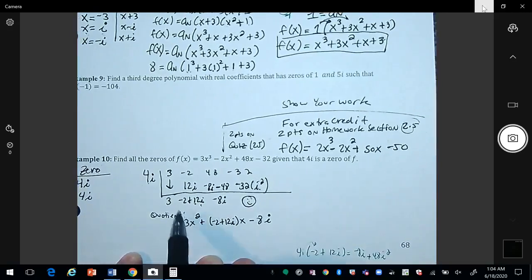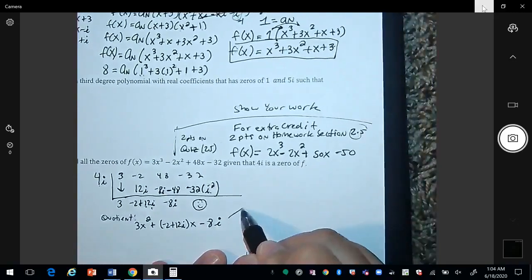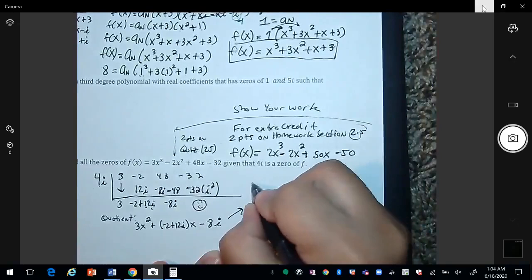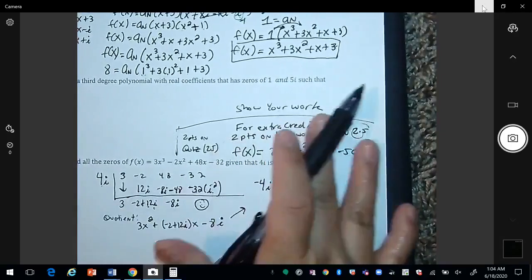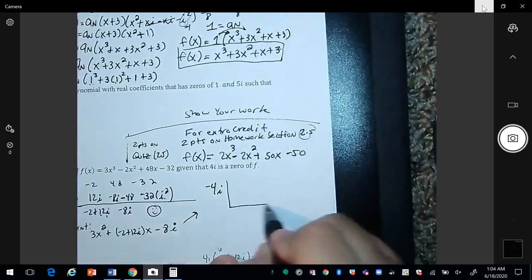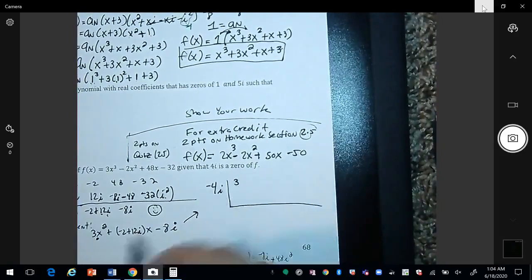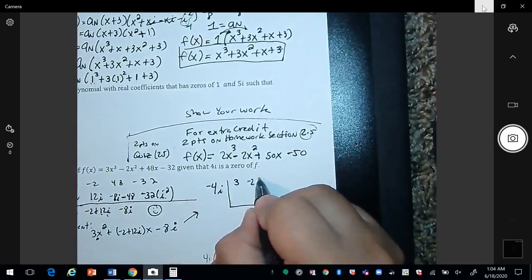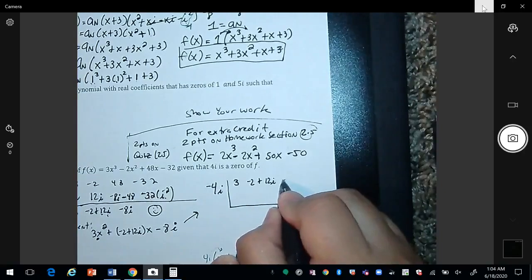Okay, so these are your coefficients. So this is quadratic, but since I have these imaginary numbers, then I'm going to use synthetic division again with my second zero, negative 4i. So remember, the conjugate is also 0. Okay, so here my coefficients would be 3, negative 2 plus 12i, and negative 8i.